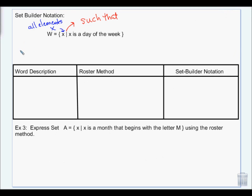In words, what this is saying is the set W is all elements X such that X is a day of the week. So that's how you would read that. And as you can see, writing it like this is much nicer. It's a shortcut. So basically, it's just a straight upside, up and down line means such that.